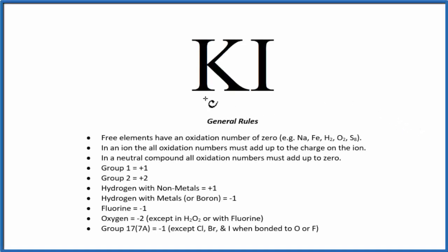To find the oxidation numbers for each element in KI, that's potassium iodide, we use these rules right here in a periodic table.